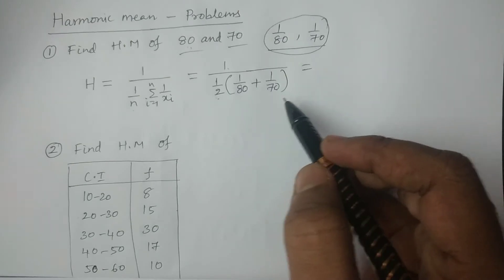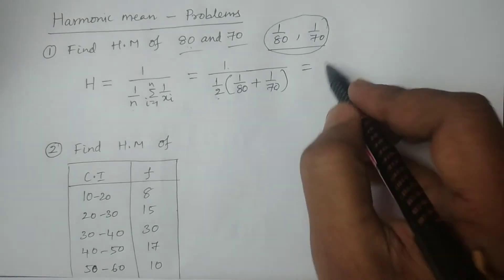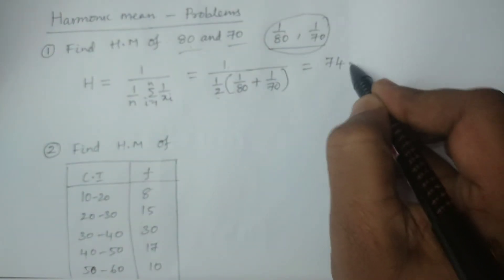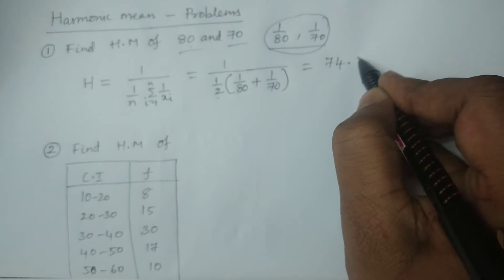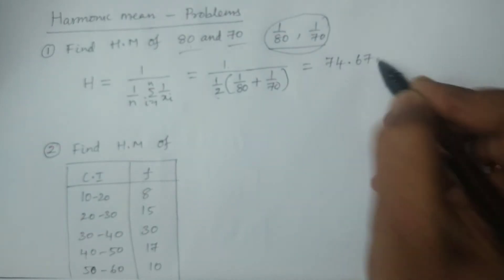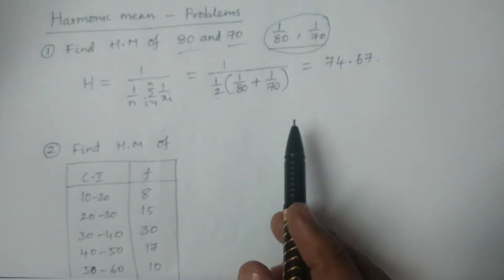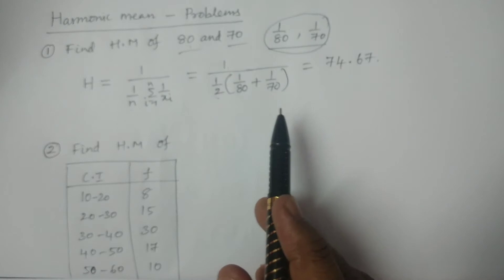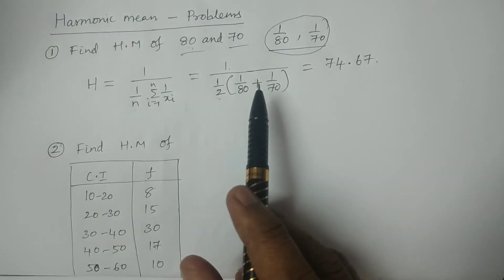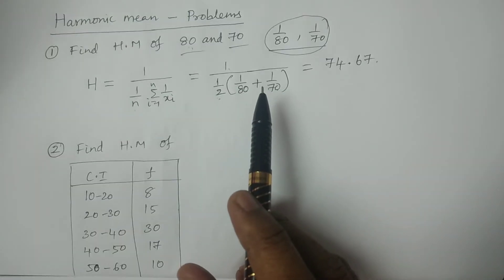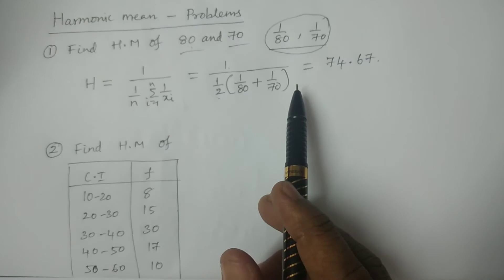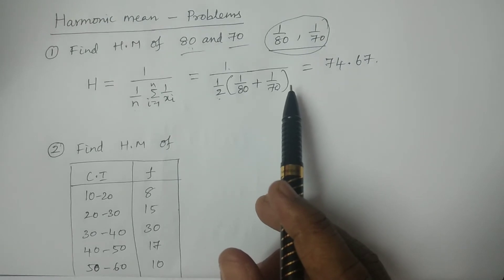Finally, if you solve this, you will get approximately 74.67. This is the calculation of harmonic mean in the case of ungrouped data.